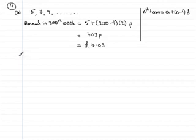For part B, we've now got to find out what the total savings would have been over the complete 200 week period. So that means we need to total the sum of 5 plus 7 plus 9, etc., all the way up to that 200th week.